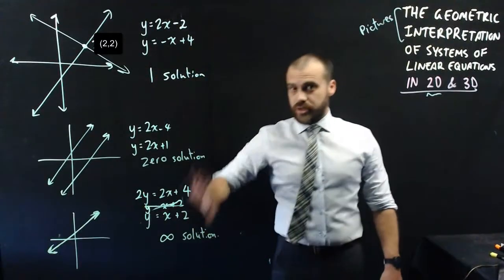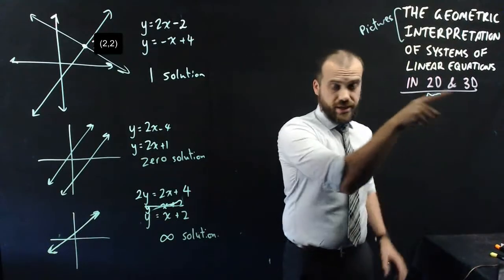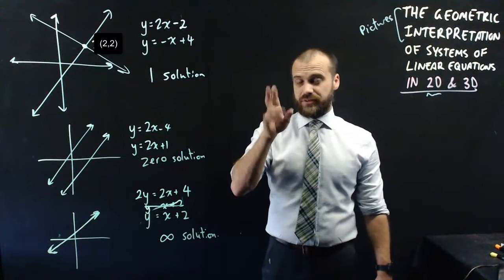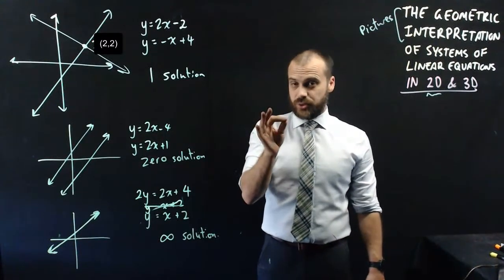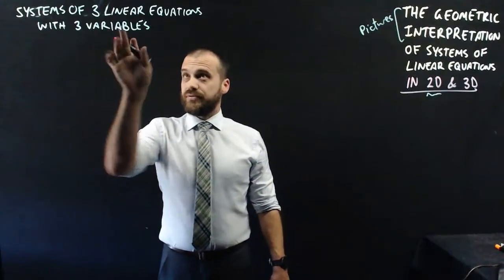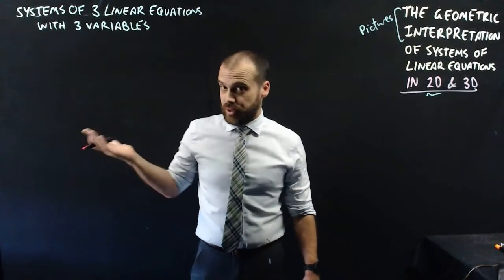So that's stuff you already know. It's not really what we're here to talk about. This 3D thing is what we're here to talk about, and this is where you're really going to have to start thinking, because it's hard to visualize. But luckily, I've brought some props. So it's time to start talking about systems of three linear equations with three variables.